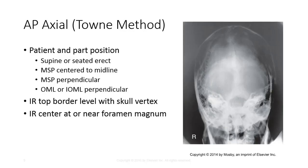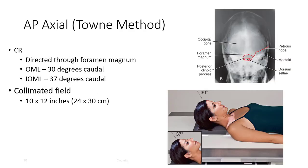Next we have the AP Axial Towne's view. You may place the OML or the IOML perpendicular to the IR with the patient supine or seated upright. Depending on which positioning line you utilize, the degree of angulation for the tube will vary. If using the OML, angle the tube 30 degrees caudal. If using the IOML, use 37 degrees caudal. The central ray should exit through the foramen magnum. Collimate to a 10 by 12 inch field size. The skull will be elongated in this view, and if performed correctly, the dorsum sellae should be visible within the foramen magnum.